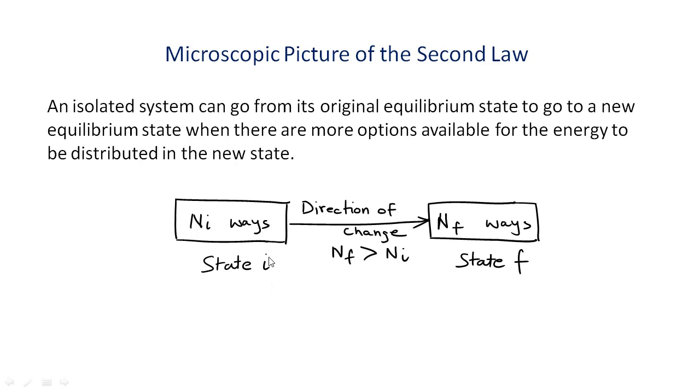A system moves spontaneously to a state where there are more options available for its energy to be distributed or a system moves to a state where its energy is more distributed rather than being clumped up. Spreading out happens spontaneously because if there are more options available there is nothing stopping a system from taking them. Nature always prefers more options rather than less options, all else being same.